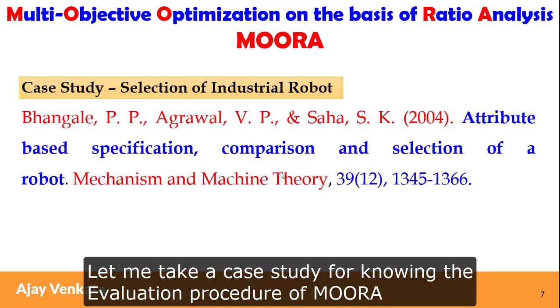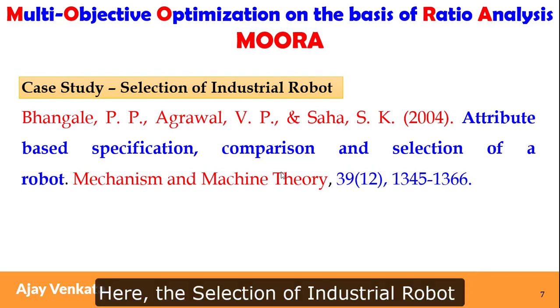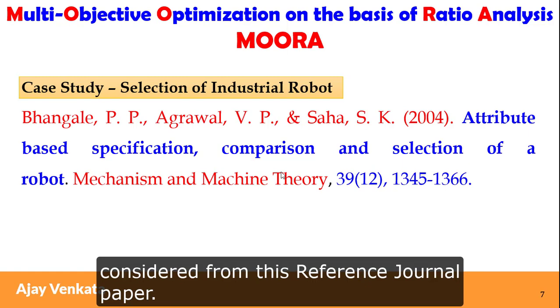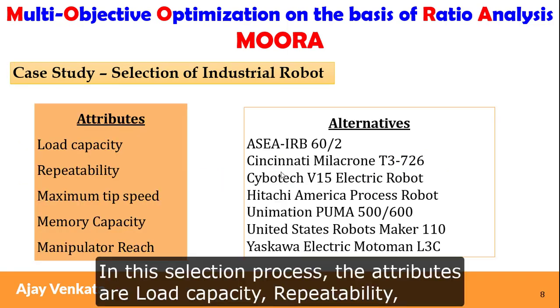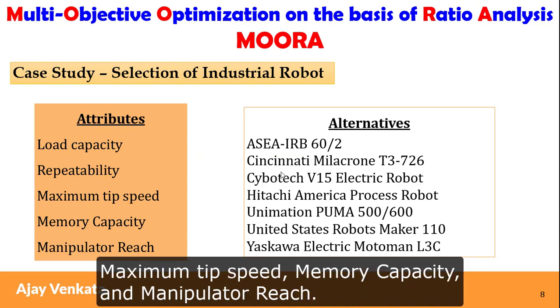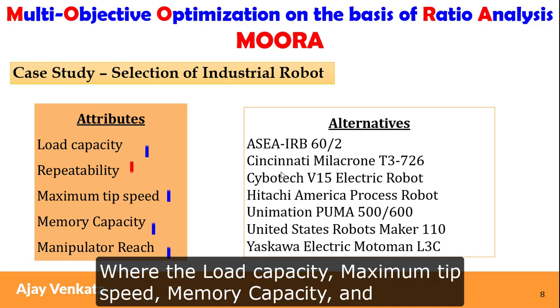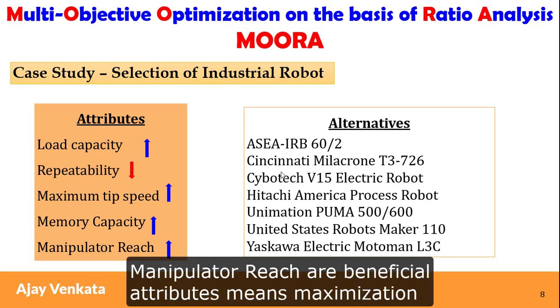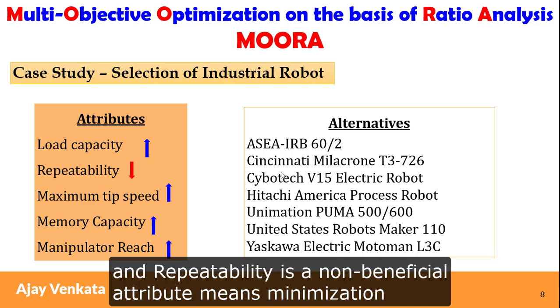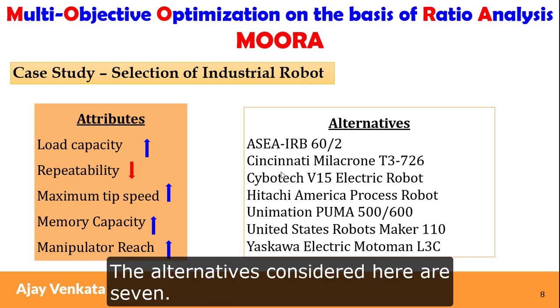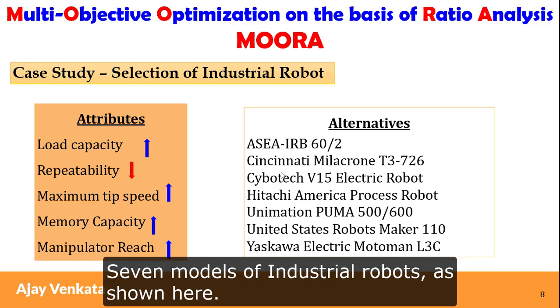Let's make a case study for knowing the evaluation procedure of MOORA. Here the selection of industrial robot is considered from this reference journal paper. In this selection process, the attributes are load capacity, repeatability, maximum tip speed, memory capacity, and manipulator reach. Load capacity and maximum tip speed are beneficial attributes meaning maximization, and repeatability is a non-beneficial attribute meaning minimization. The alternatives considered here are seven models of industrial robots.